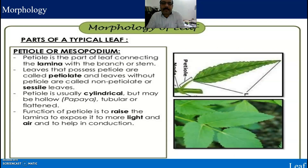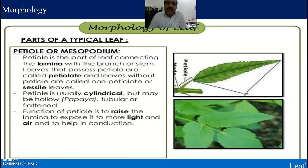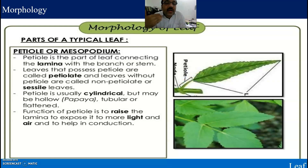The next important part of a typical leaf is the petiole. The petiole is the part of the leaf connecting the lamina with the branch or stem. Leaves that possess a petiole are called petiolate, and leaves without a petiole are called non-petiolate or sessile leaves.